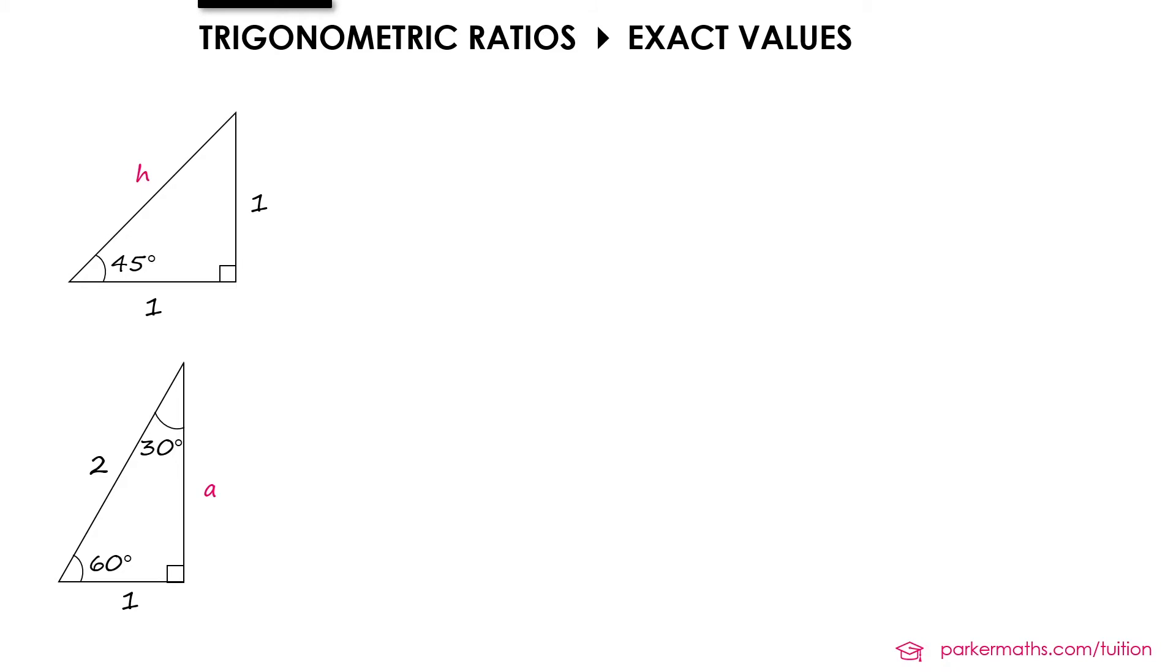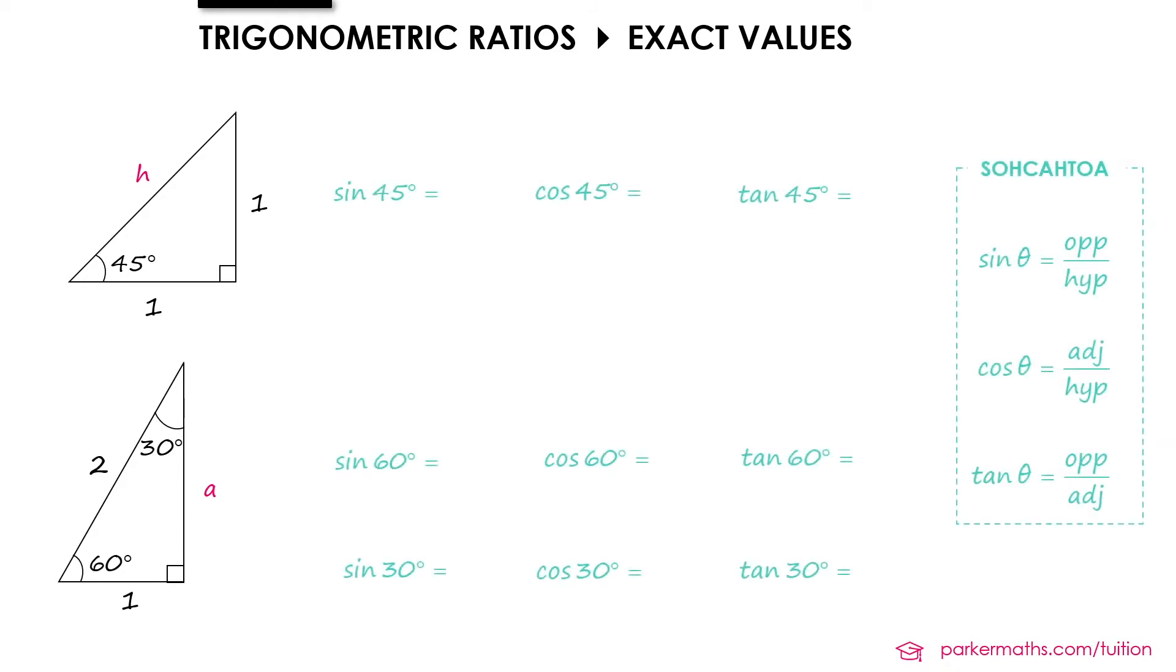So what I'd like you to do is using these identities find the exact values sine, cos and tan of 45, 60 and 30 degrees. In order to do that you will first need to find the missing values on the right angle triangles you can see on the left. So pause the video have a go at these questions and then come back and check your solutions against mine.